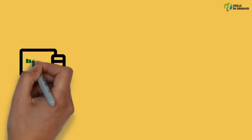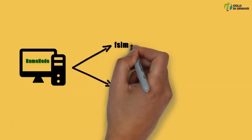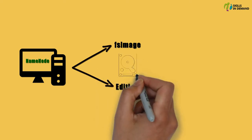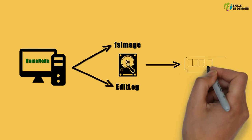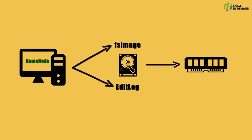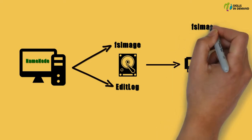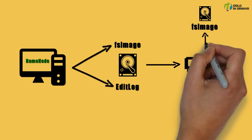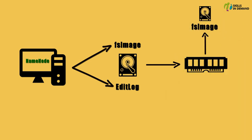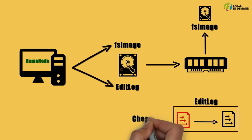When the name node is started, it reads the fsimage and the edit log file from the disk and applies all the transactions to the metadata from the edit log file that has been copied to the RAM. Once this is completed, a new version of the fsimage is written onto the disk from the memory. In this new edit log file, all the old entries are truncated. This process is known as checkpoint.